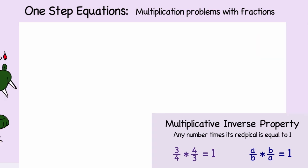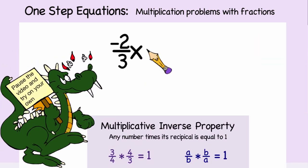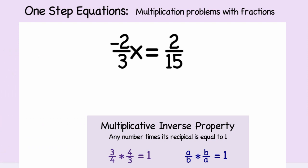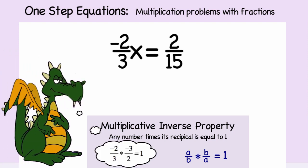So now it's your turn. Try negative two-thirds x is equal to two-fifteenths. The multiplicative inverse of negative two-thirds is negative three-halves. So we need to multiply each side of the equation by negative three-halves.